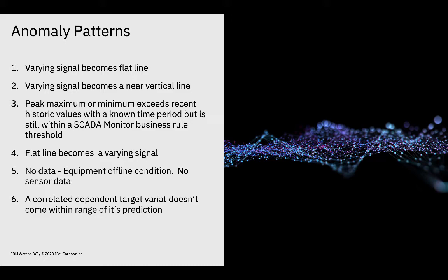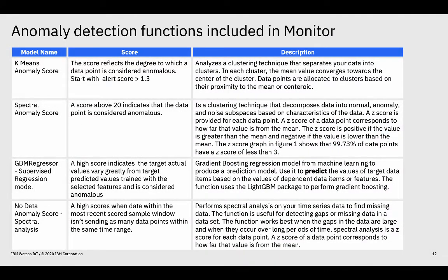It's looking at multiple things as opposed to just one thing in terms of anomaly detection. The anomaly detection models included in Monitor are really broken up into two types. One is what I think of as unsupervised regression models — that's the GBM regression. We also have the anomaly detector, which is self-training; it looks at your data and is multivariate as well. Then we have statistical-based models, examples of which are k-means and spectral anomaly scores. Some of these statistical-based ones, and even some of the supervised ones, are well documented in the public domain.